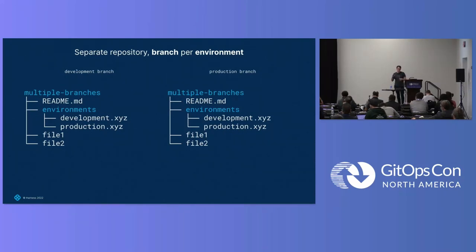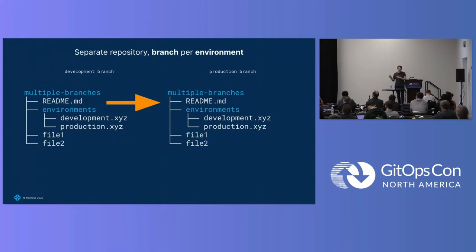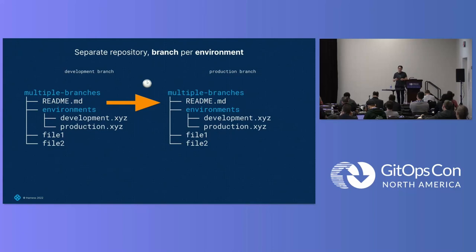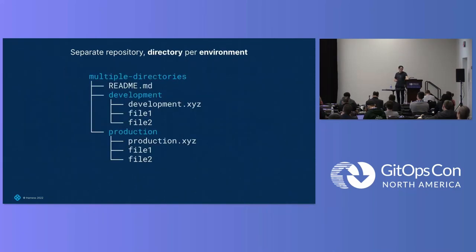Next, let's look at splitting out configuration into a separate repository where there's a branch per environment. Changes would always originate in the development branch and get promoted to production by being merged into the production branch. These two environments differ only by time — production is always destined to catch up to development eventually. This can be challenging where if you make changes in development that aren't ready for production, you might end up having to do some complex cherry-picking to promote only the changes you wanted.